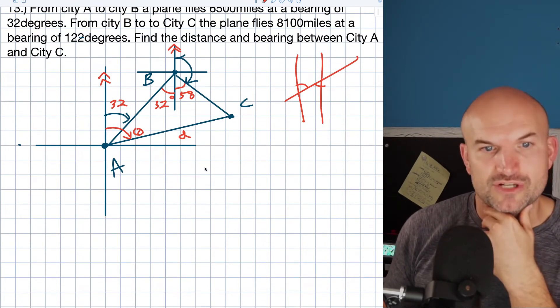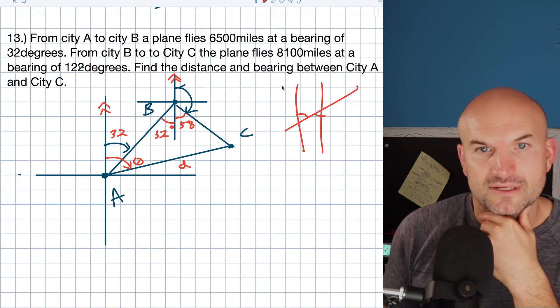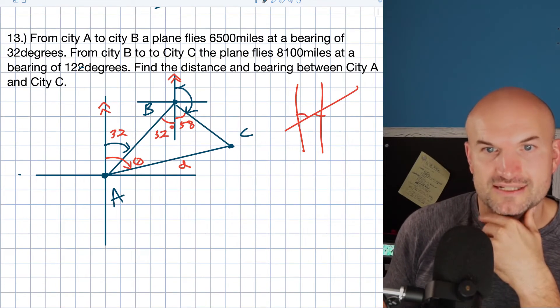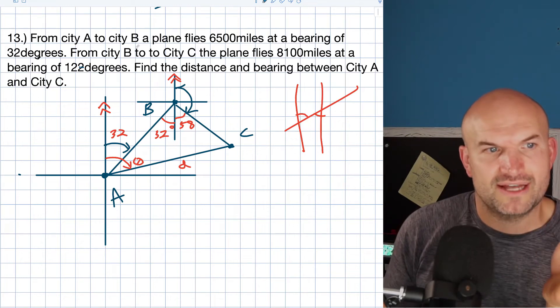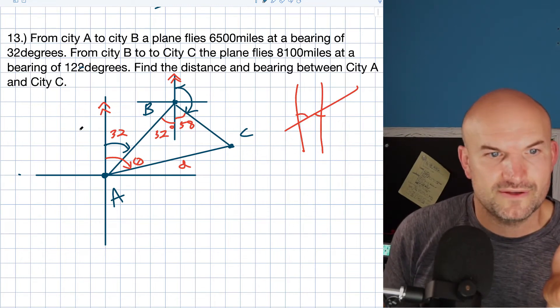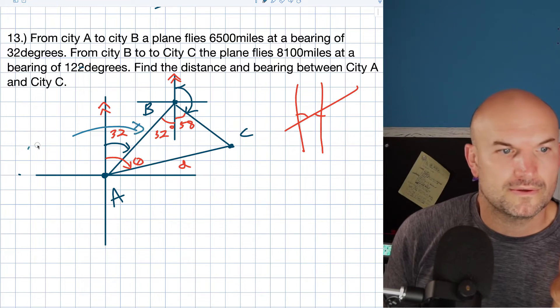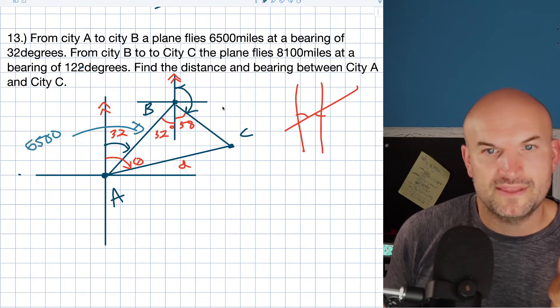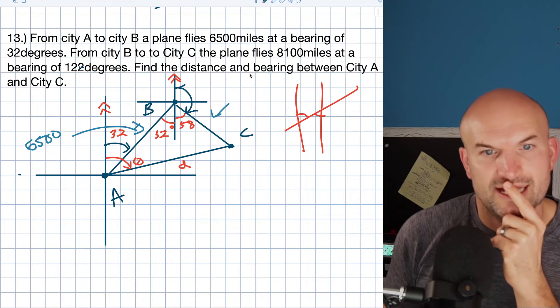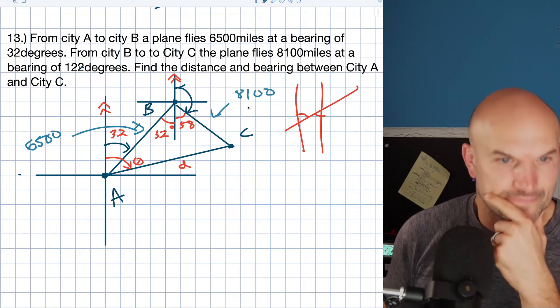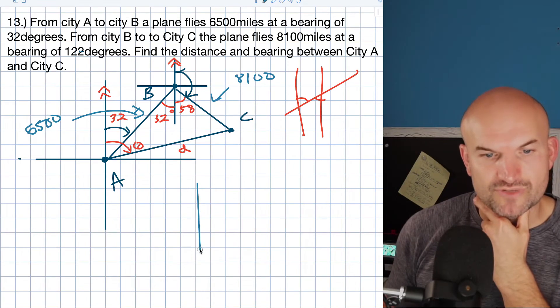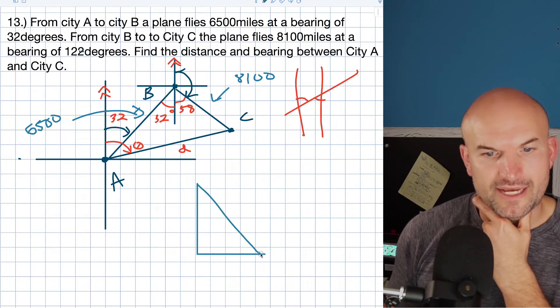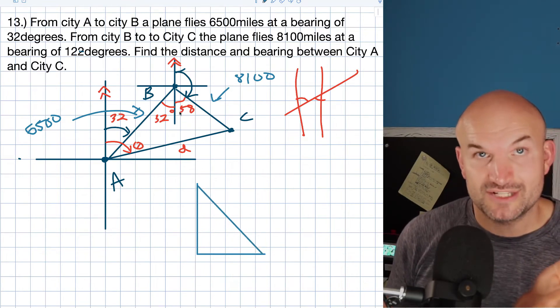So that is going to be 32 degrees. The reason why this is so important - what we're looking for is let's redraw this triangle. And actually let me draw the sides here that we have. We have this is 6,500. Right. And then this was what, 8,100? Okay. So let's go through the angles that we have so far. So let's redraw this triangle.